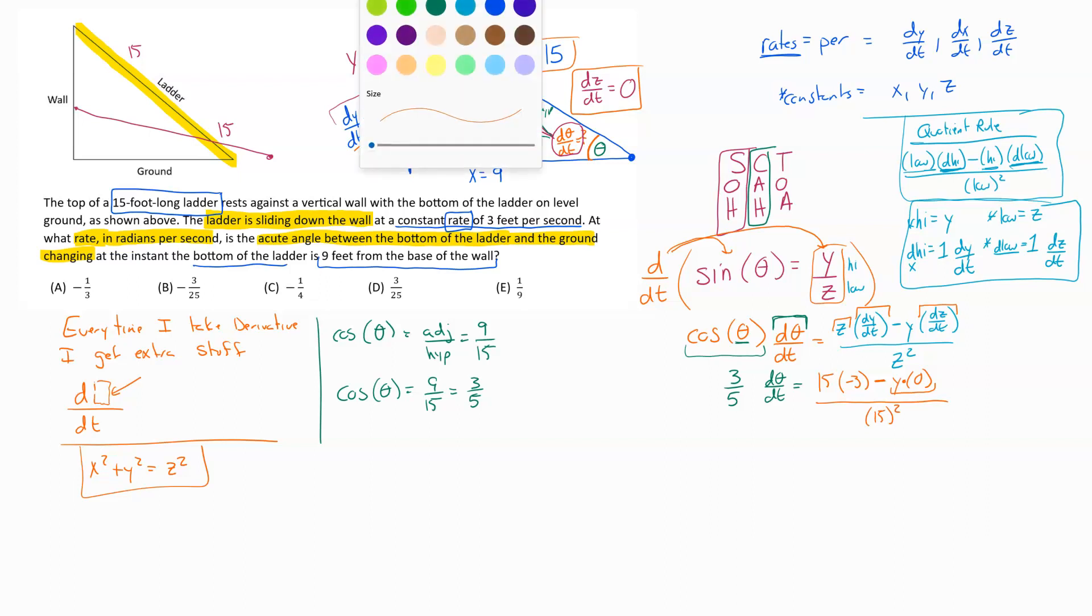So we'll keep cleaning this thing up now and working towards our answer. So we get 3 over 5, d theta dt equals, I get negative 3 times 15 is going to get me negative 45. And then again, 0 times anything is 0, so that goes away. And then here I'm going to get 225 on bottom, that's 15 squared. And one of the things I can do on this now is I can also reduce this fraction over here. I can pull a 15 out of there, leaving me with a 3. Remember, you had a 15 right there. And I can pull a 15 out of the bottom, leaving me with a 15 down there. Remember, we had two of these 15s, so we just kind of took away one. So now we're looking at 3 over 5, d theta dt equals negative 3 over 15.